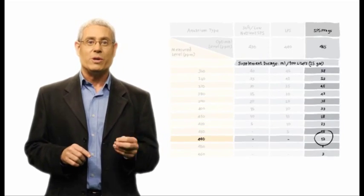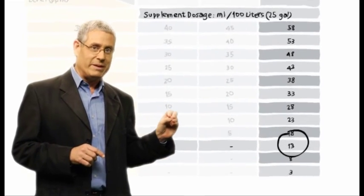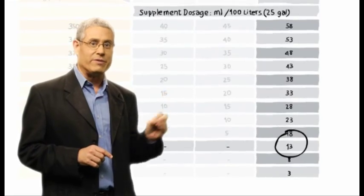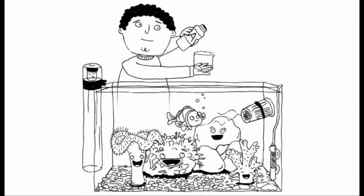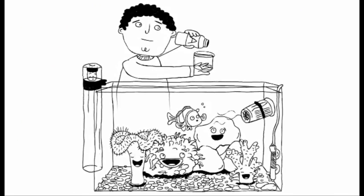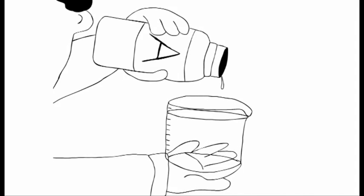the table shows that we need to add 13 milliliters of supplement for each 100 liters of aquarium water, which can be easily measured with the dosing cup we provide with each bottle. Simple really.